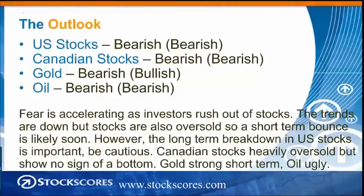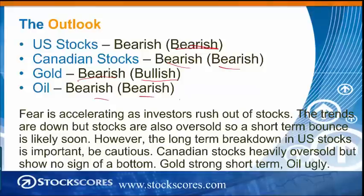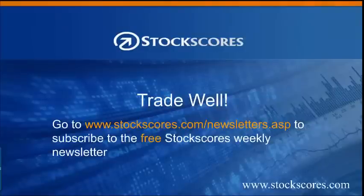So what are my ratings? I am bearish on U.S. stocks, both long and short term. Pretty oversold right now, so we could see that bearish jump to neutral if we get a little bounce back early next week. Canadian stocks — bearish on both time frames. Gold — I'm bearish long term, but actually bullish short term because of that little rally we've been having. That's something you can trade if you are a day or swing trader. If you are anything longer term than a few days, stay away from this stuff — it's just too volatile. Oil — bearish on both time frames. Strong downward trend. Fear is accelerating as investors rush out of stocks. The trends are down, but stocks are also oversold, so a short-term bounce is likely soon. However, the long-term breakdown in U.S. stocks is important, so be cautious. Canadian stocks heavily oversold, but show no sign of a bottom. Gold is strong in the short term, but not so much in the long term yet. And oil continues to be ugly. That has been the Stock Scores Market Minutes for January 11, 2016. Have a great week in the market and trade well.